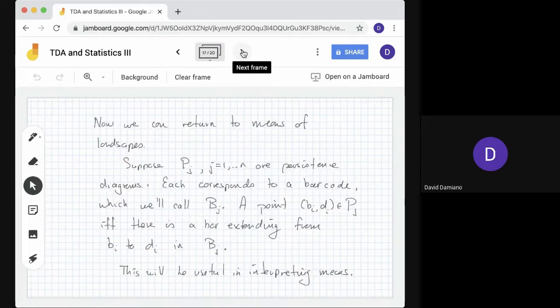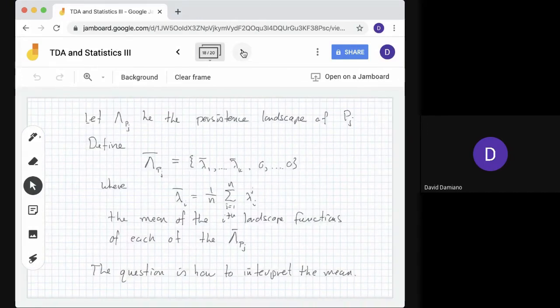Now let's return to the means of landscapes. Suppose we have diagrams pj, our persistent diagrams, each corresponds to a barcode bj. A persistence point (bi,di) in diagram pj corresponds to a bar that extends from bi to di in bj. This will be useful in interpreting means.